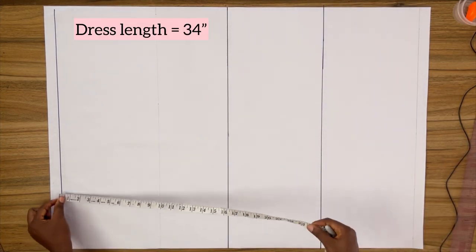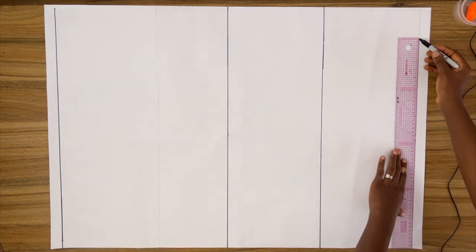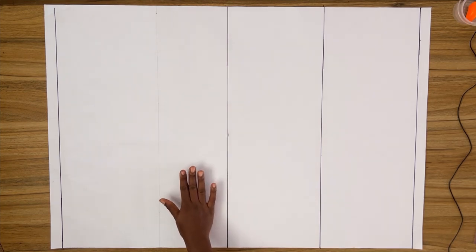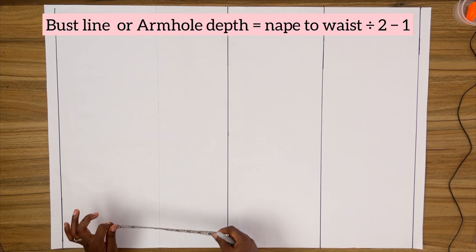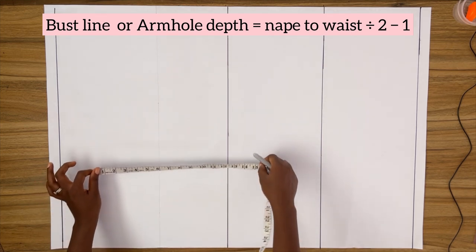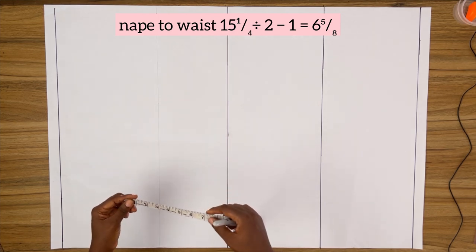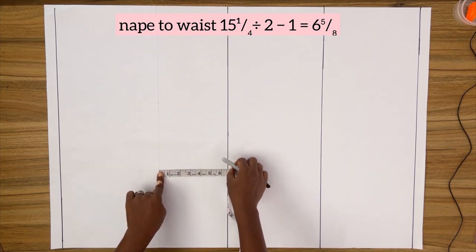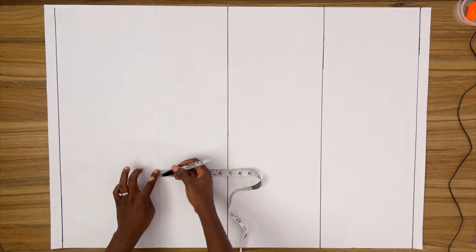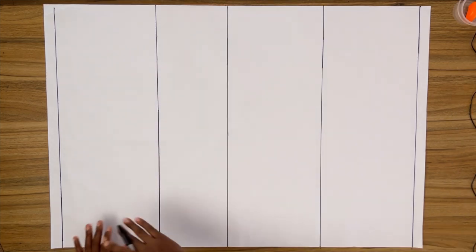From the top line, I'm going to measure down the full length of my dress — I'm working with 34 inches, which is above my knee. I'll square out a horizontal line; this is the hem of the dress. The next line we need to establish is the bust line. The formula is: take your nape to waist measurement, divide it by two, then subtract one inch. My nape to waist is 15 and a quarter, so dividing by two gives 7⅝, and subtracting one inch gives 6⅝. Measure this distance upward from the waistline and square out a horizontal line — this becomes the bust line for both front and back.